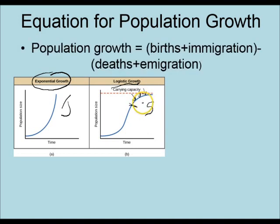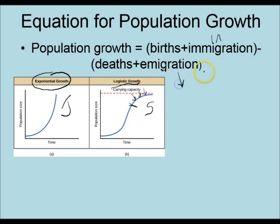When we look at population growth, we have an equation: population growth equals births plus immigration — immigration being what's coming into your population — minus deaths and emigration, which is what's going out of your population.